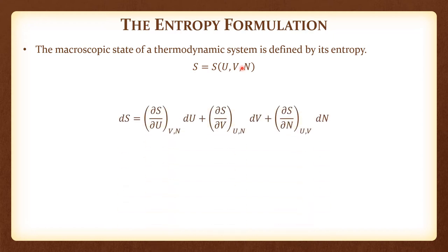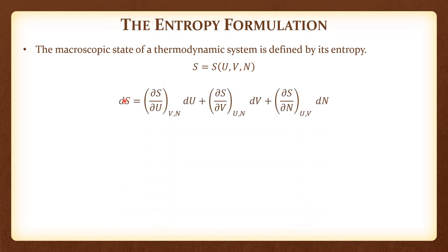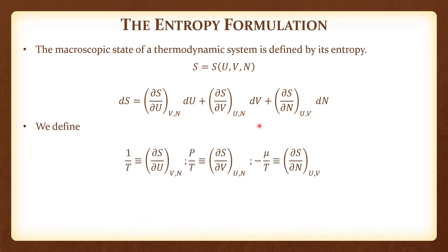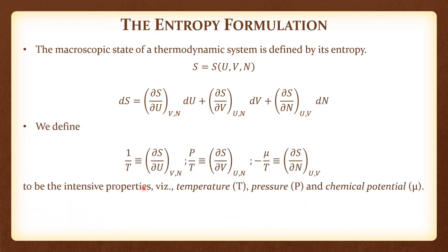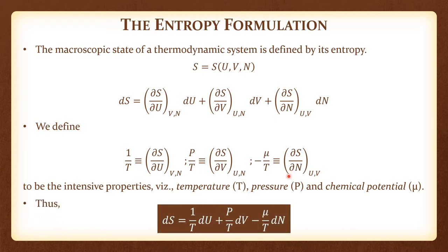Given S is a function of U, V, and N, the total differential of entropy is obtained from dU, dV, or dN. We define the partial derivatives, which are intensive properties since both S and N are extensive and therefore the partial derivative is intensive. We can write dS = dU/T + (P/T)dV − (μ/T)dN. In this lecture we focus on this particular work mode and what chemical potential means.